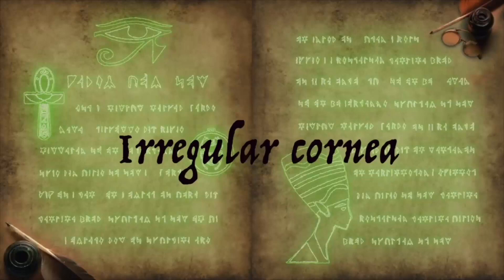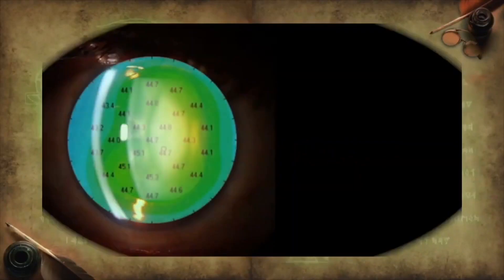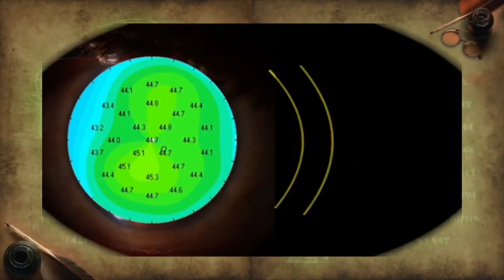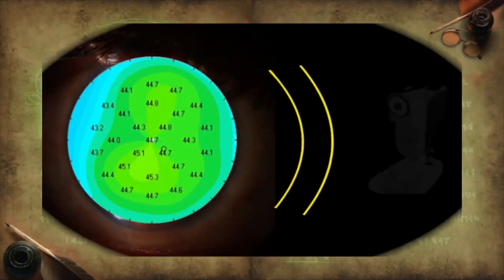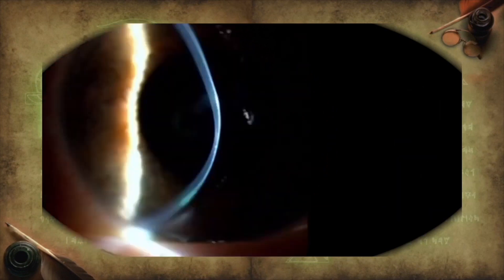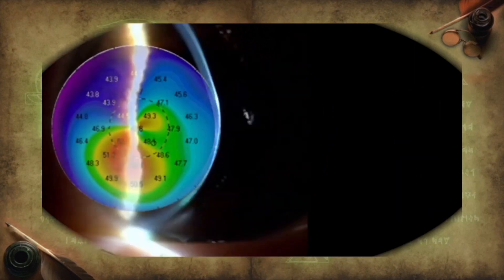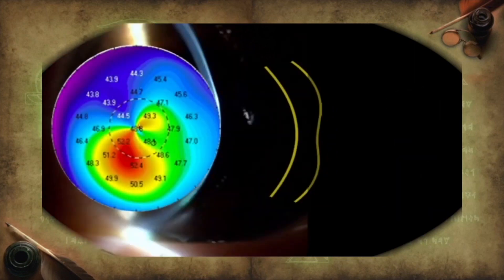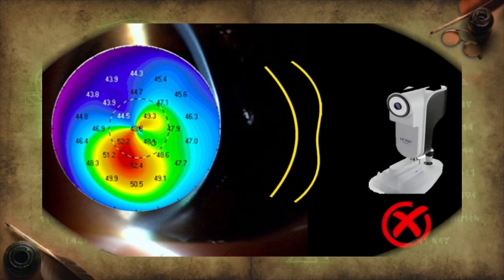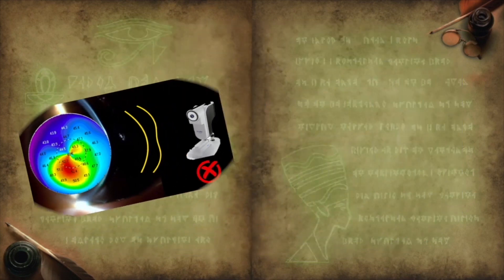The next scenario is that of irregular cornea. Irregular cornea is characterized by its keratometric value, which is usually calculated from the anterior curvature of the central cornea. However, in an irregular cornea, the anterior to posterior corneal curvature ratio is altered, and therefore the effective corneal power cannot be predicted.